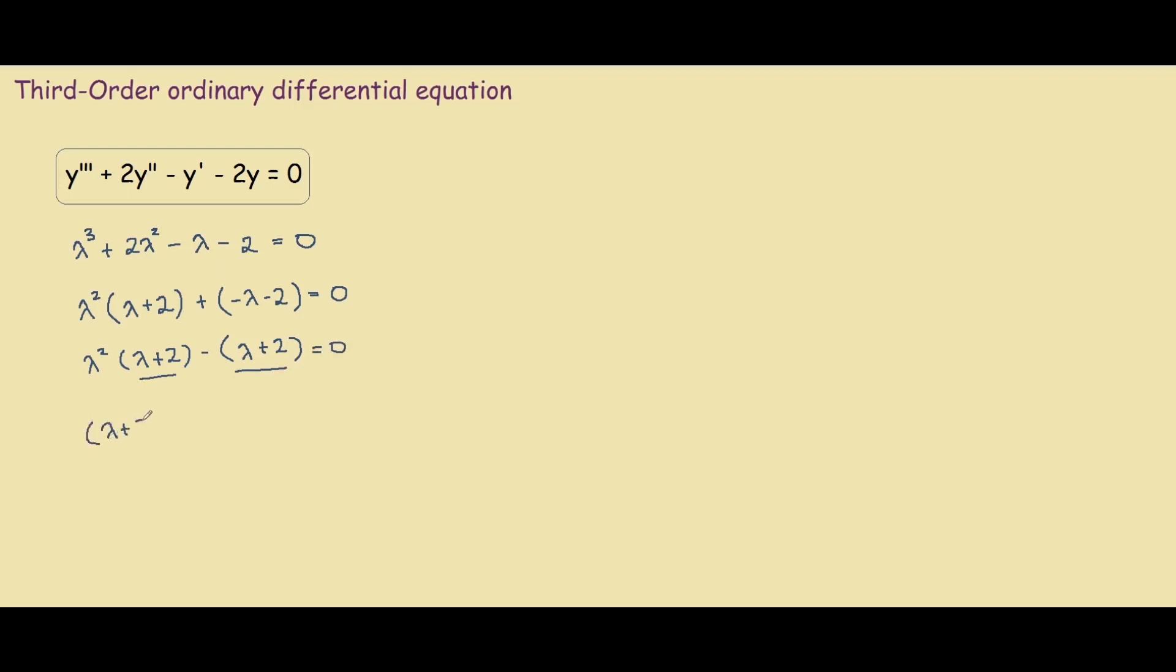And now we have a nice term over here that we can just factor out. So we have lambda plus 2 times lambda squared minus 1. And that equals to 0.